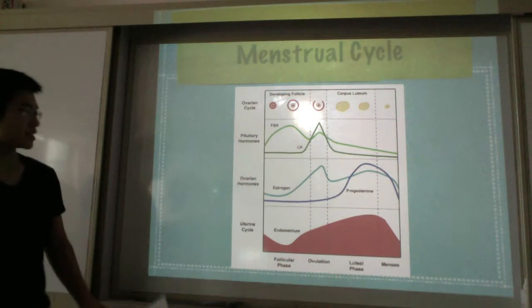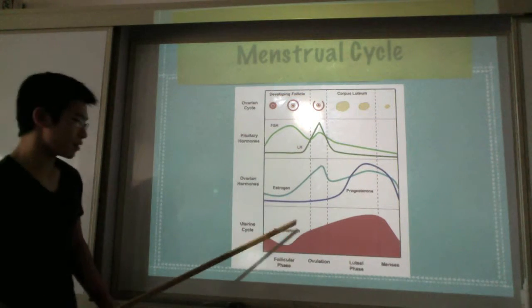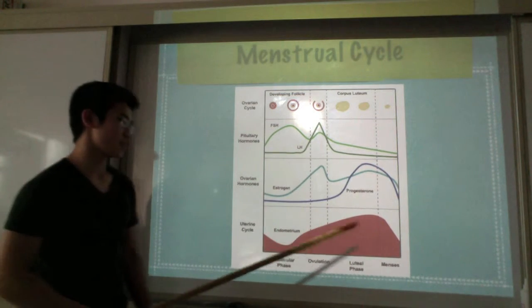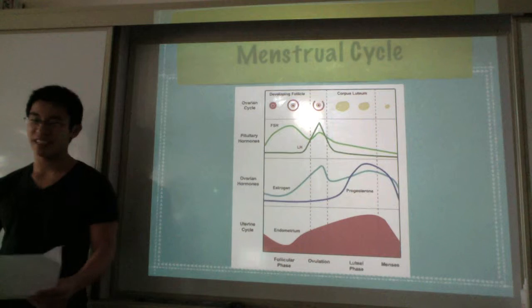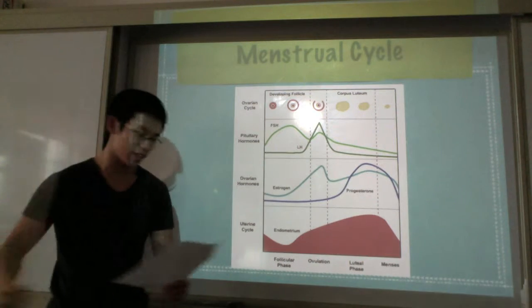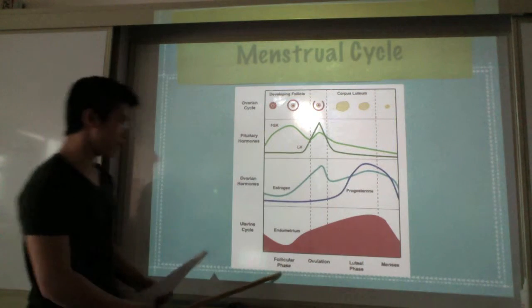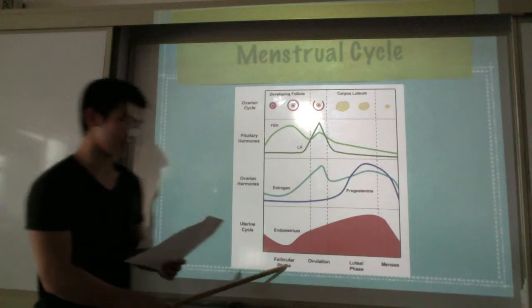So the menstrual cycle consists of four phases. The first phase is the follicular phase.